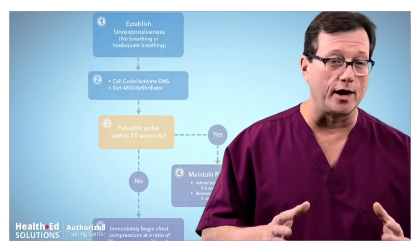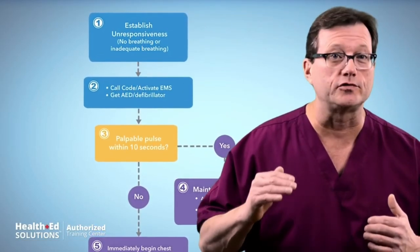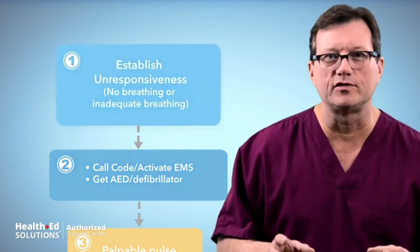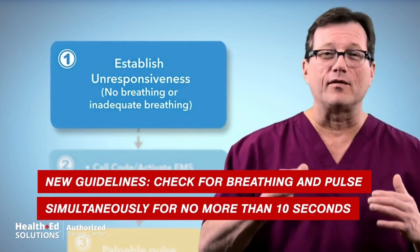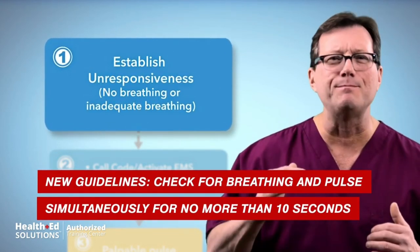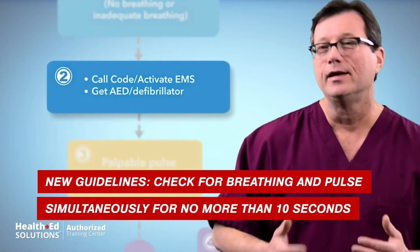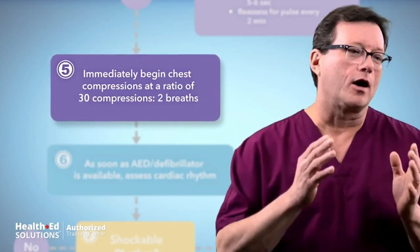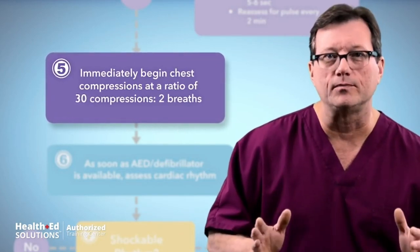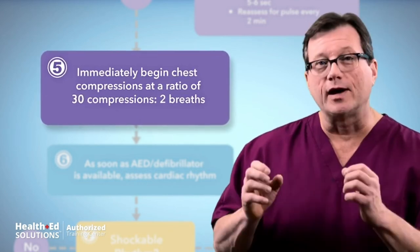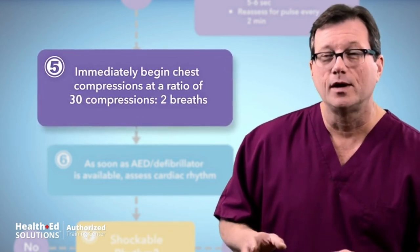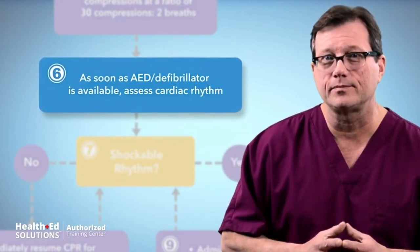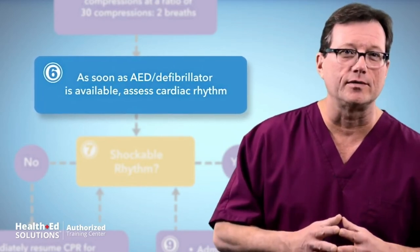In this BLS demonstration for a pediatric patient: first, establish unresponsiveness. Next, look for breathing for about five seconds. If the child is not breathing, immediately call the code and get help. In two-rescuer healthcare provider BLS for a child, the compression-to-ventilation ratio is 15 to 2 — provide 15 compressions, then two ventilations. Attach the child to an AED to assess for a shockable rhythm.